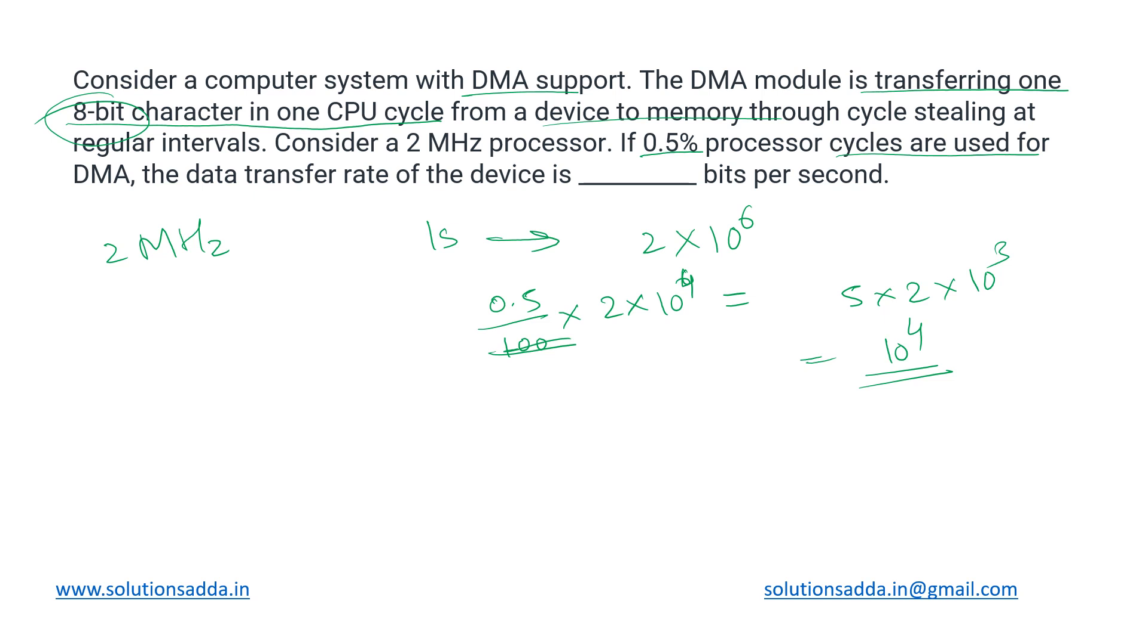This is 1 second only we are dealing with. Now in every second, what is the amount of data we are transferring? That would be 8 times 10 to the power 4, so that becomes 80,000 bits. This is the amount of data we are transferring in 1 second.